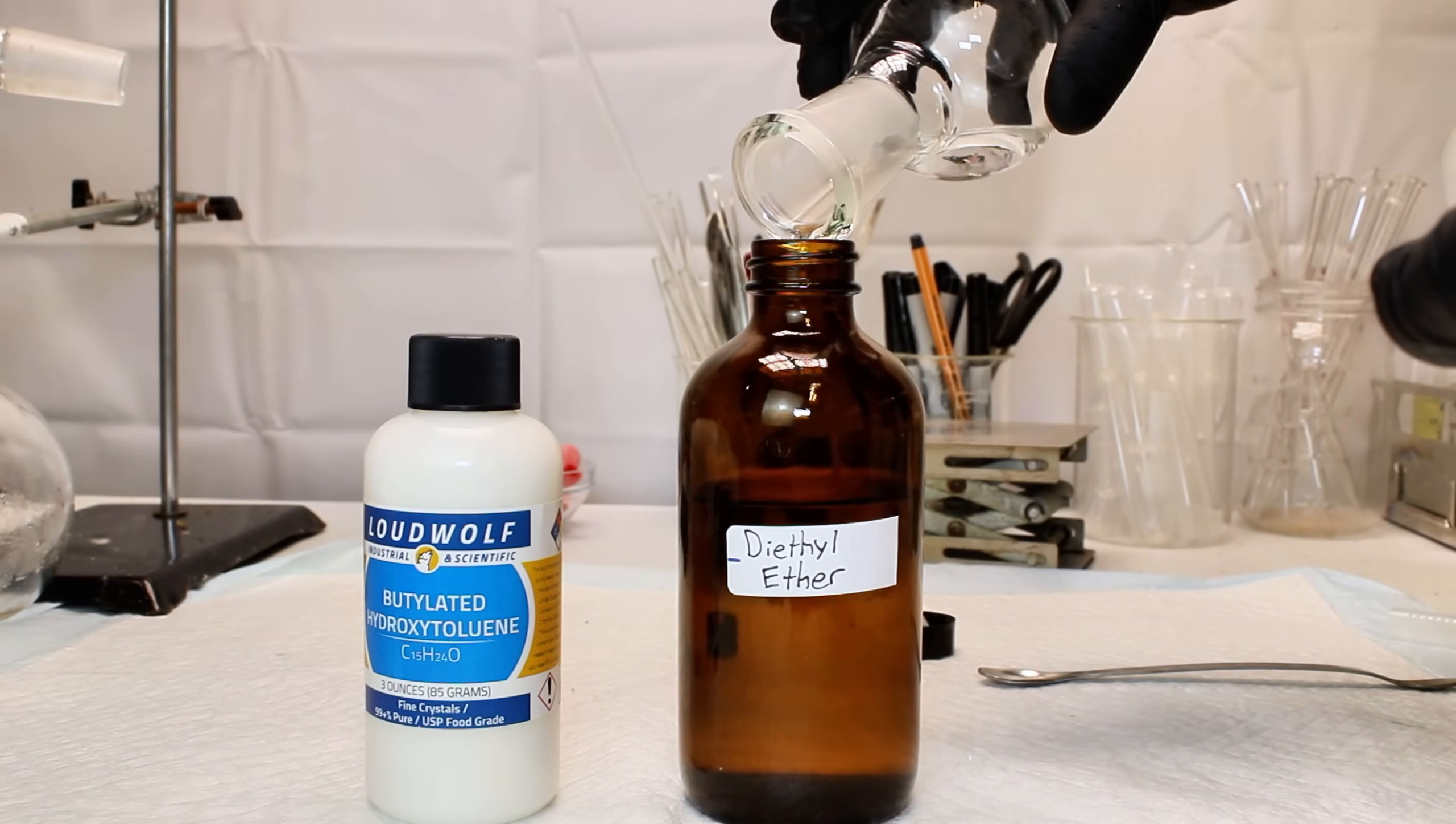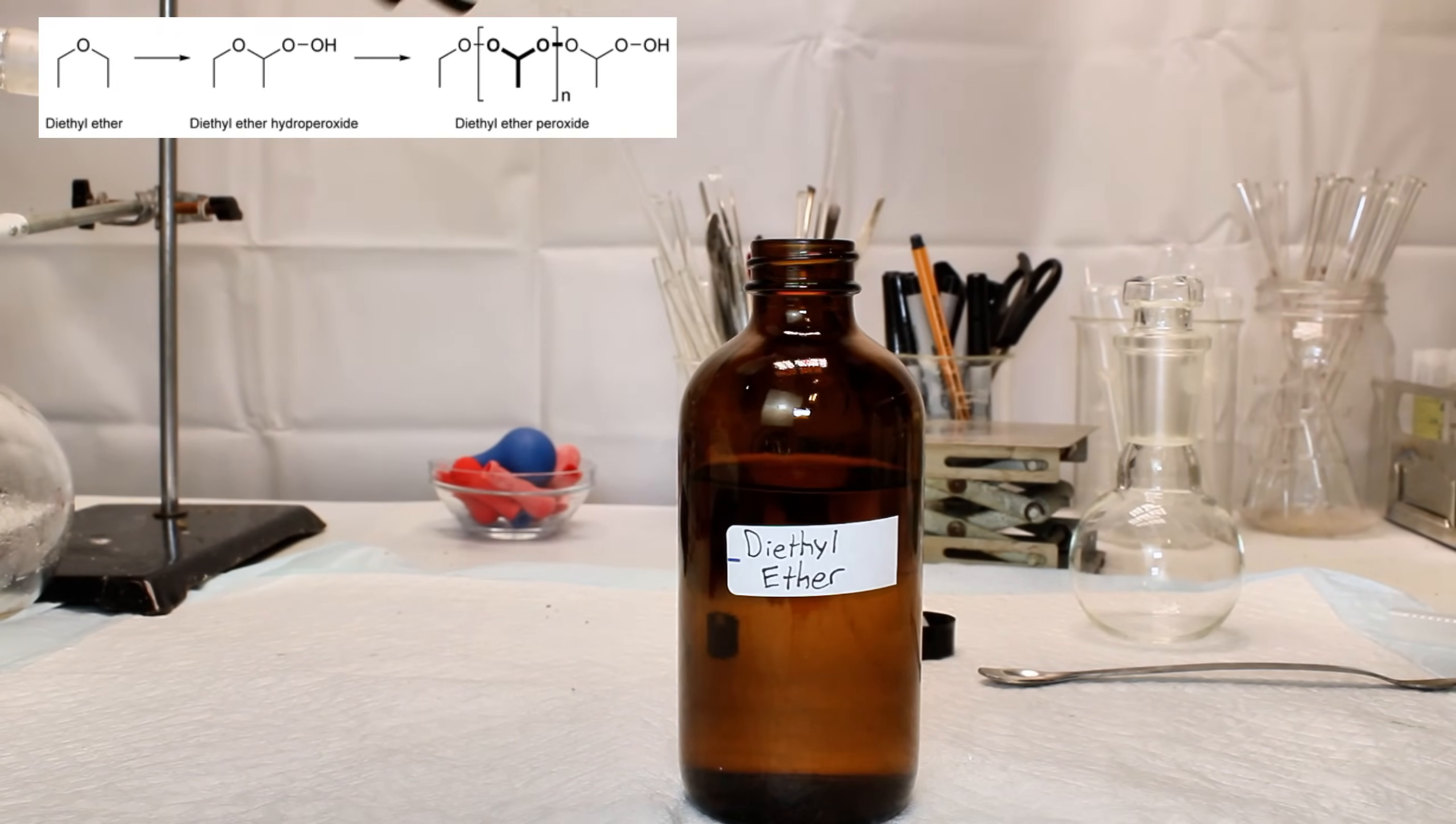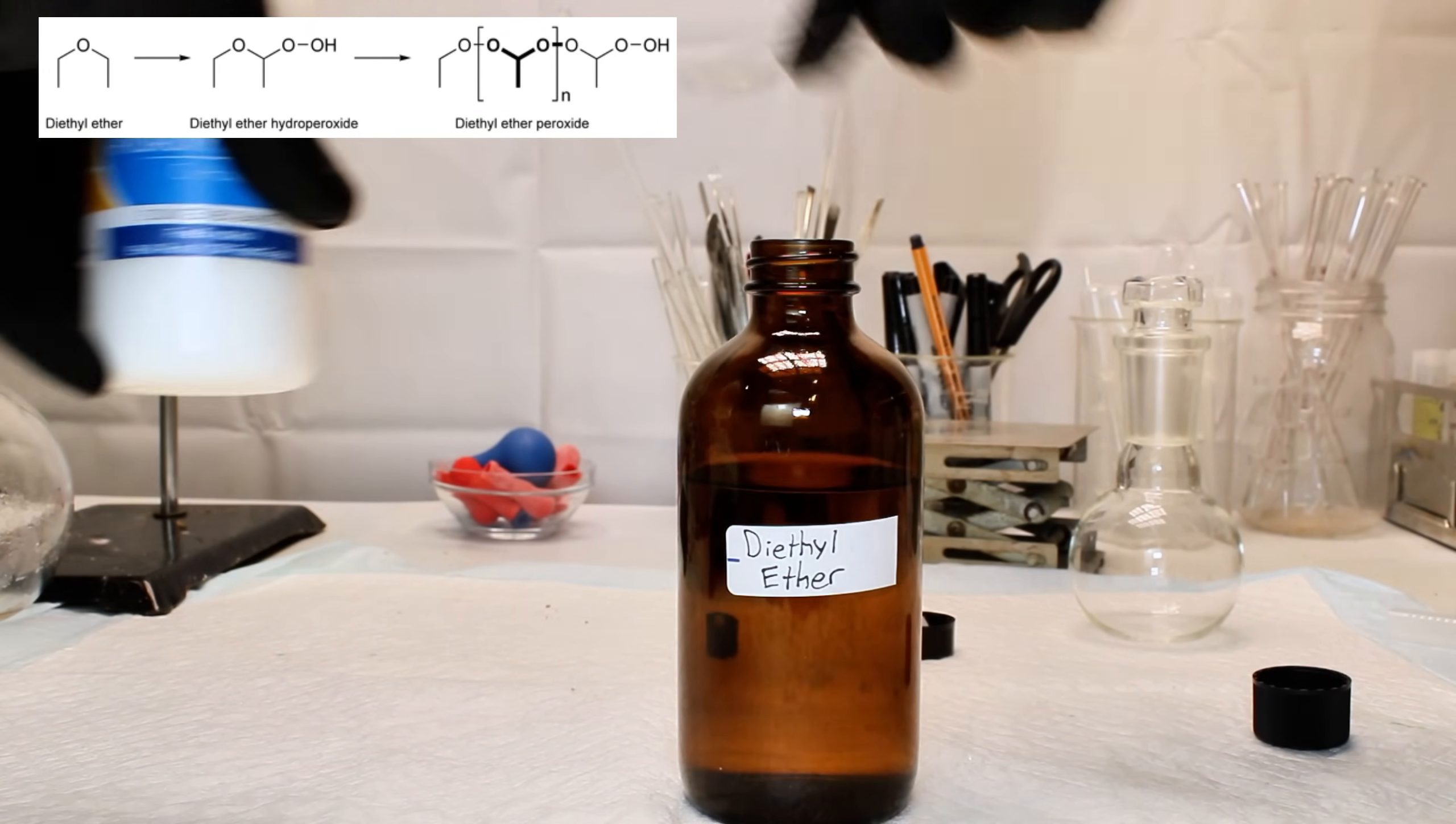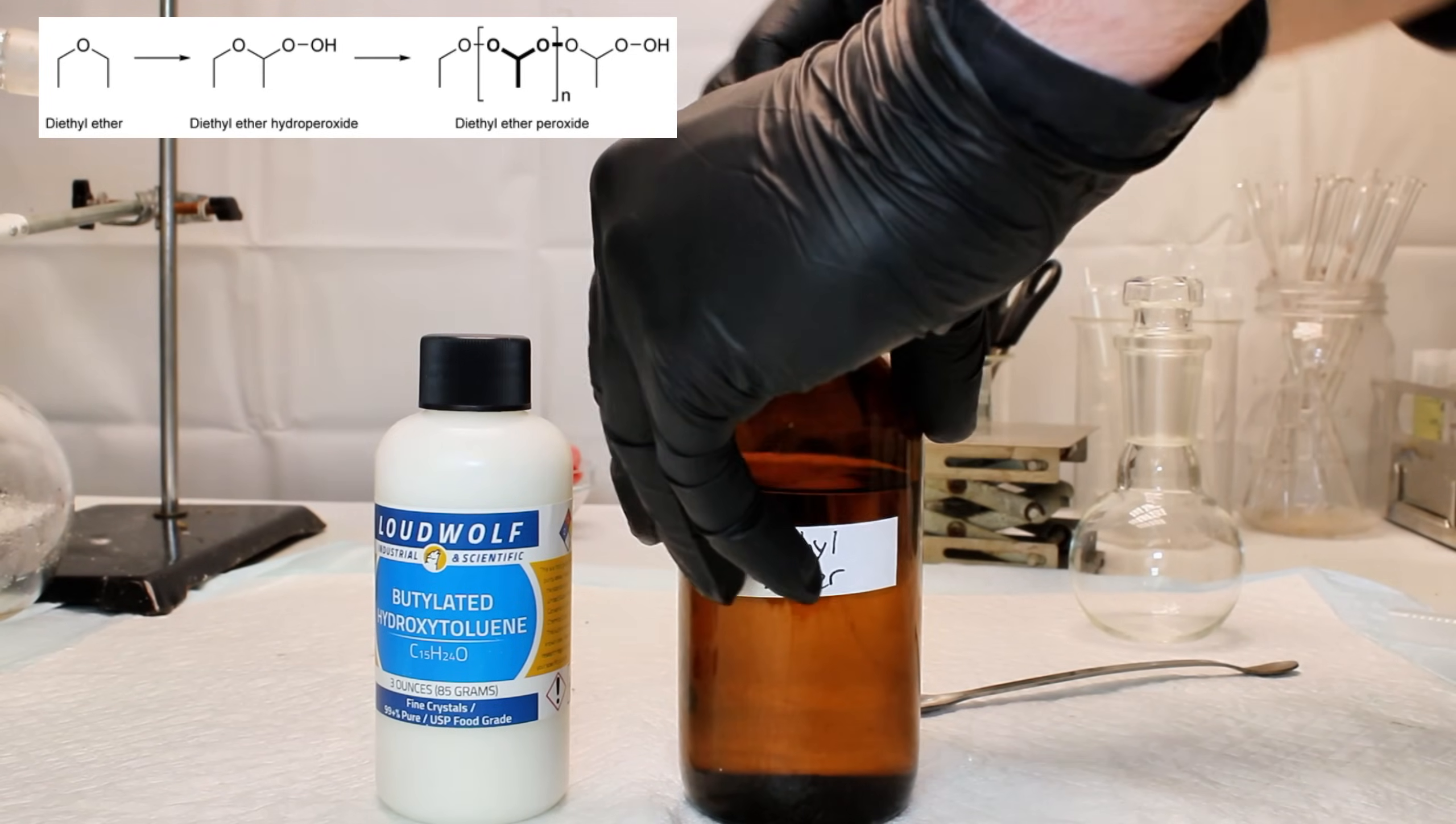That said, these final steps are important, as diethyl ether will very slowly form explosive ether peroxides over the course of several months. The ethanol helps to inhibit this decomposition, while the butylated hydroxy toluene is a reducing agent, and it will destroy these peroxides as they form.